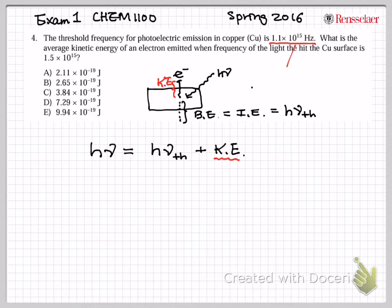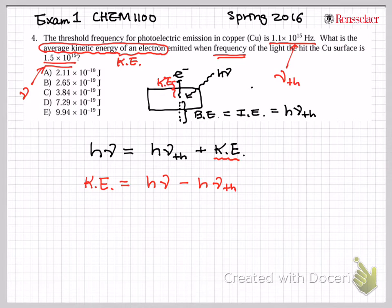And here we go. This information was given as threshold frequency, so the threshold frequency is nu_th, and also the average kinetic energy of an electron is being asked. So this KE is being asked when the frequency of the light shined on that was this number. And this one is now the nu itself. So the question is, what is the kinetic energy of the electron that moves around when you shine energy h*nu, and it takes h*nu_threshold to escape from the surface. So therefore, h*nu minus nu_threshold.